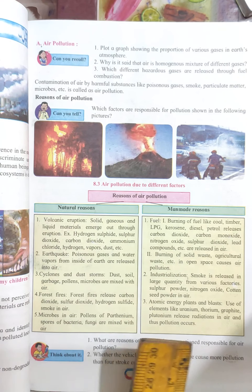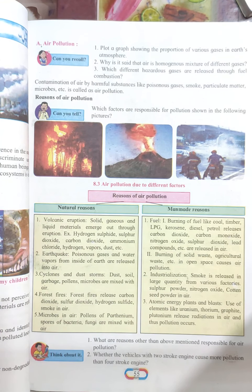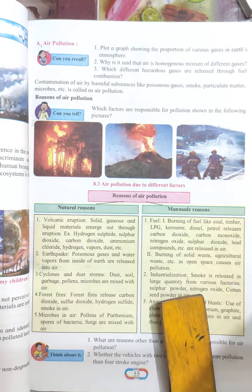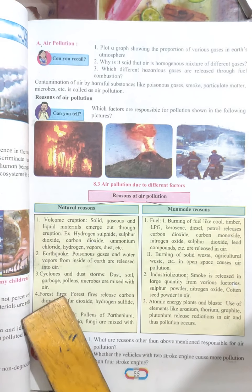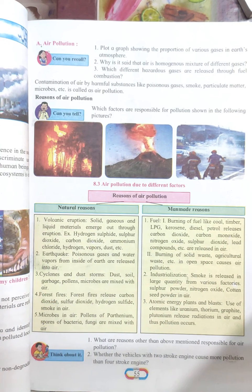Lastly, atomic energy plants and blasts — use of elements like uranium, thorium, graphite, and plutonium release harmful radiations and UV rays into the air, causing pollution. These were the natural and man-made reasons for air pollution. In the exam, a two-mark or five-mark question may come asking you to write the natural or man-made reasons for air pollution.